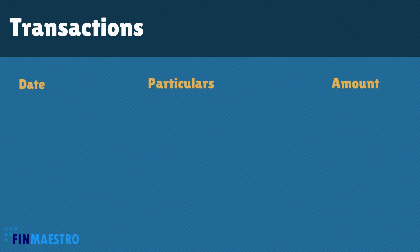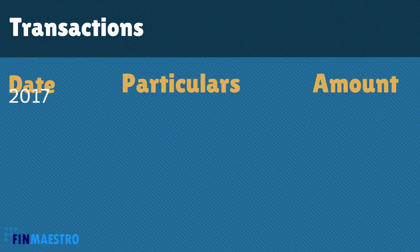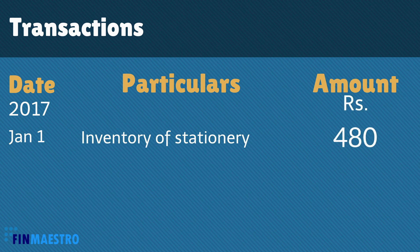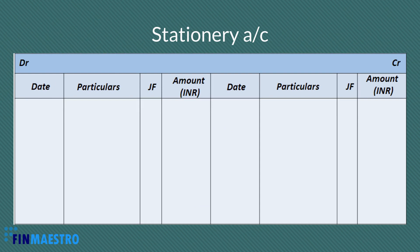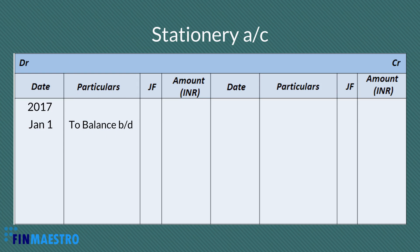Now let's see the transactions one by one. The first item states that on January 1st, the beginning of the period, this firm has an inventory worth Rs. 480. This is called the opening balance. Since this is an asset, and all assets have debit balance, we will write the opening balance at the debit side. It is a practice to use the word 'To' at the beginning of all debit transactions, so let's write 'To Balance BD' — BD means brought down — amount Rs. 480.